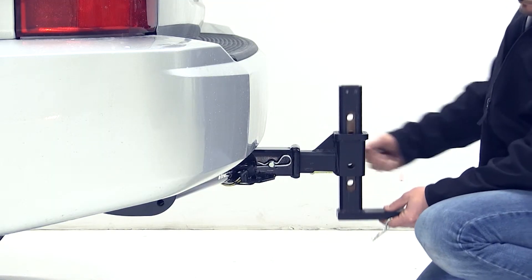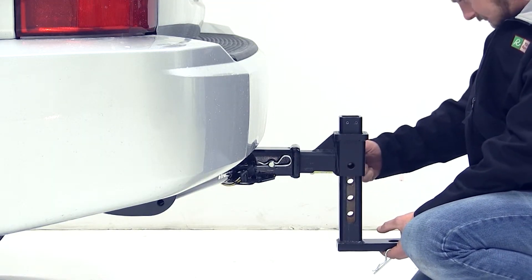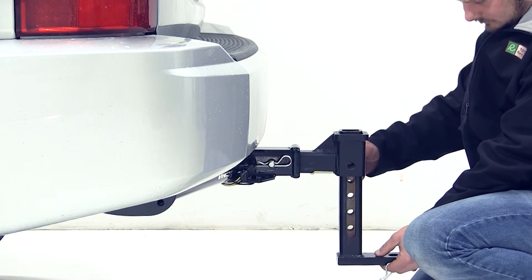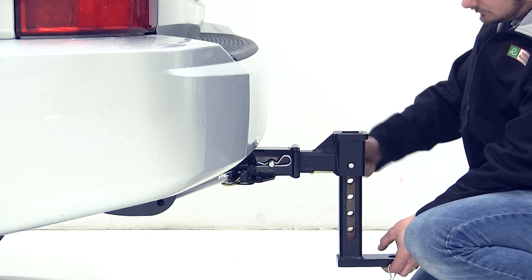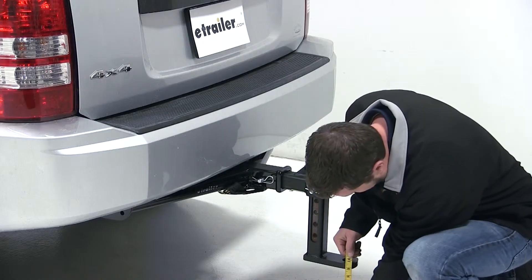Now it's in the drop position and has a maximum drop of 9 inches. From the top of the ball platform to the ground with the ball mount in its full drop position measures 9.5 inches.